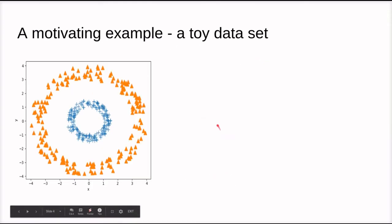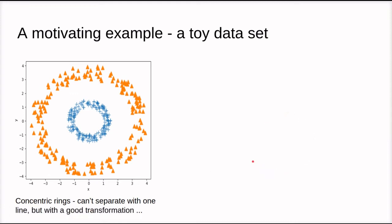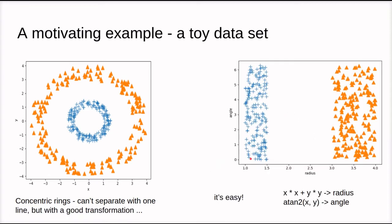To motivate the use of these features, we now look at a toy dataset of two concentric circles of data points described by their x and y coordinates. It's very obvious to see that there isn't one decision boundary we can draw through this dataset that cleanly separates the two classes. But if we use the right kind of transformation, we can turn this into a much easier problem.